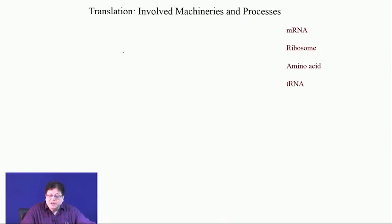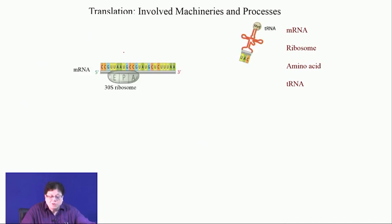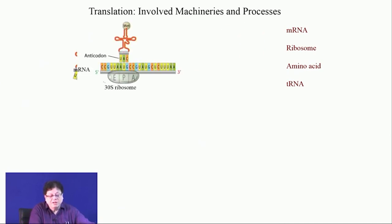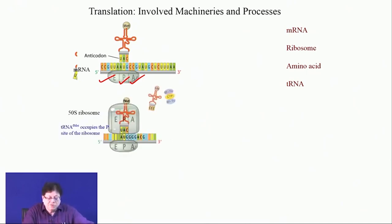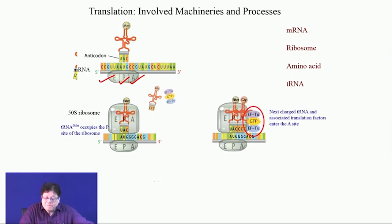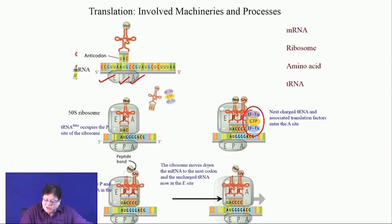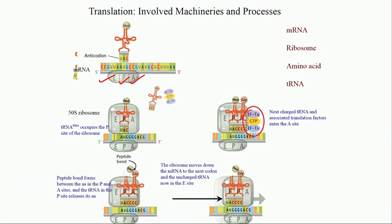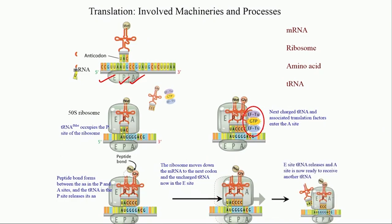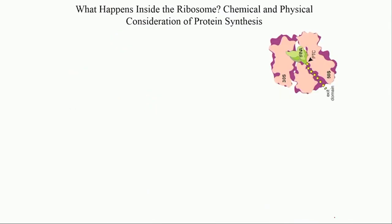A quick look at the genetic code again. Everything is covered: the exit site, peptide site, amino acid site — shown here schematically. The first amino acid is methionine, and then at the A site GGG comes in, so CCC anticodon pairs and codes for glycine. Methionine and glycine combine, the methionine is transferred to glycine, the first tRNA becomes free, moves to the exit site, and the next A site is free for the following tRNA to come in.